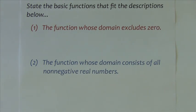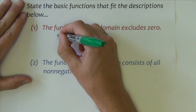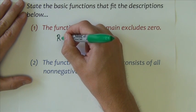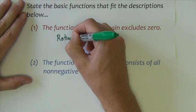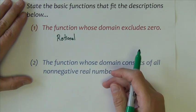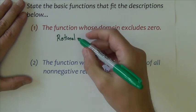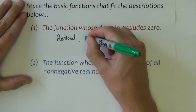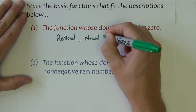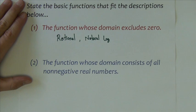The function whose domain excludes zero. So you have to think back on all of our graphs, all of our functions that we had, which ones did the domains exclude zero. One of them was the rational function, or the reciprocal function. Another one would have been the natural log function. And I think that was it.